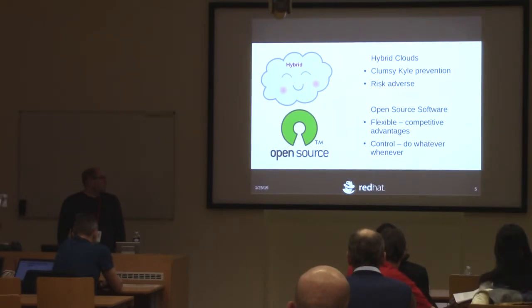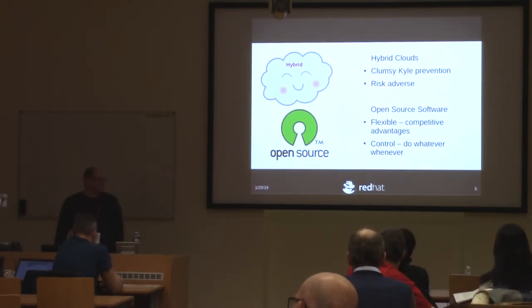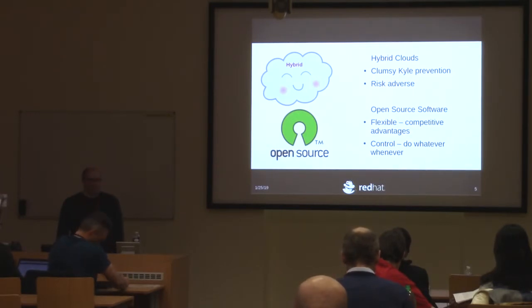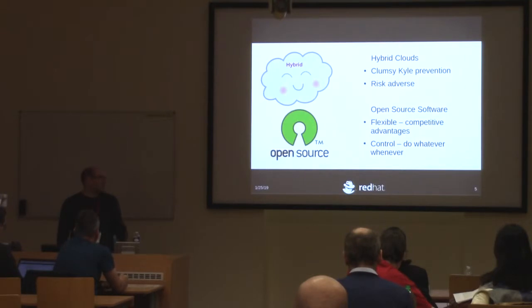One of those things is what I call clumsy Kyle prevention — we have people in our data centers that make mistakes. Someone will touch something they shouldn't, make cowboy admin changes, and things go down. Your companies probably have people like that, and so do cloud vendors. Even if you're paying exuberant amounts of money to Azure or AWS, they're still going to make mistakes. So it's important to have your systems in multiple places.